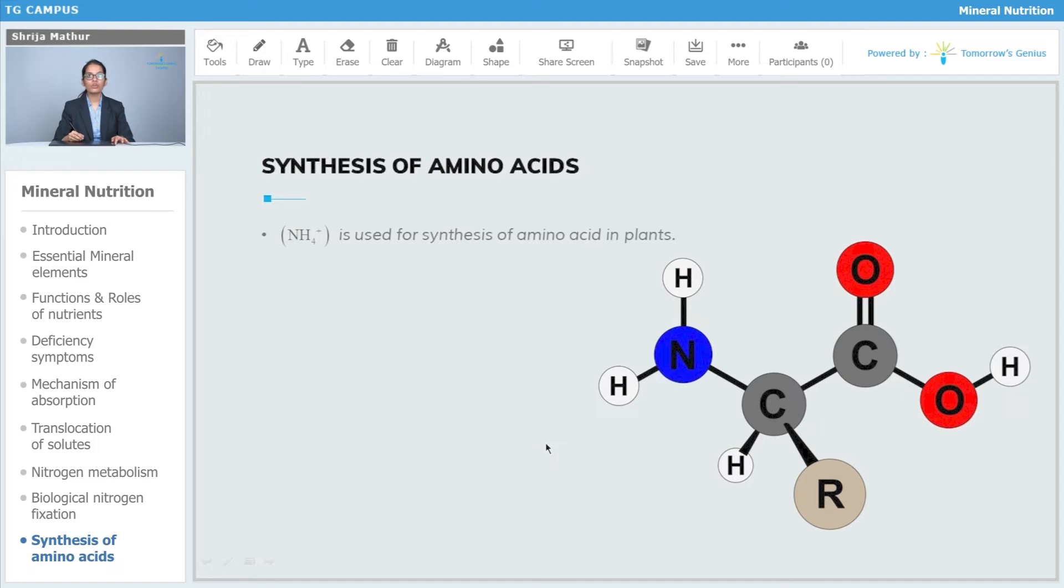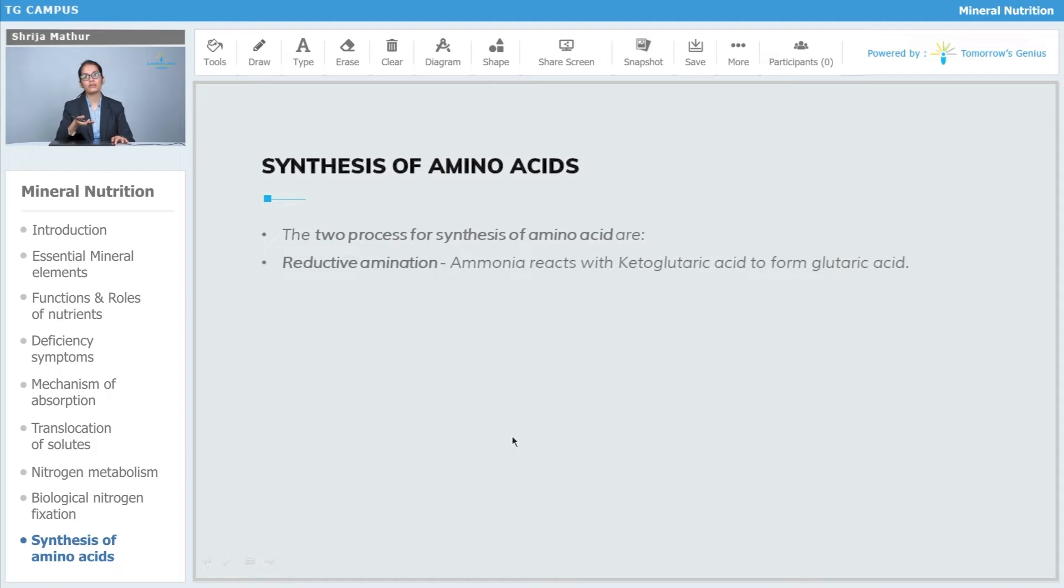Ammonium ion is used for the synthesis of amino acids in plants, and after amino acids are synthesized, proteins can be synthesized.